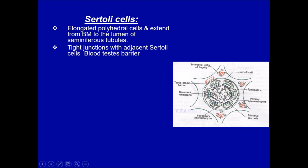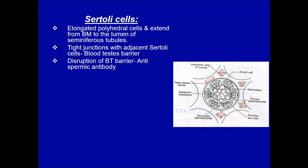If the blood-testis barrier is broken down, it leads to formation of anti-spermic antibodies, seen in sterile males. These antibodies fight the sperms and break down spermatogenesis. The blood-testis barrier formed by the Sertoli cells is therefore very important for protecting maturing sperms from the immune system.